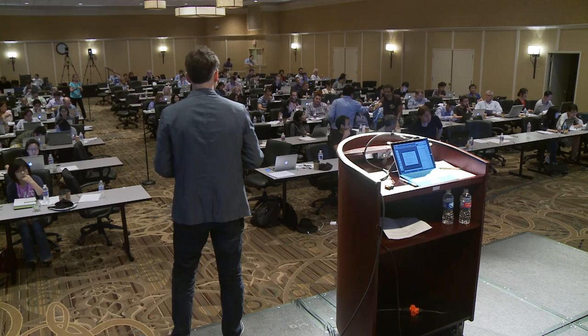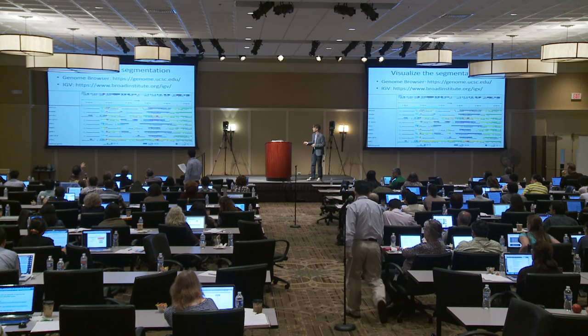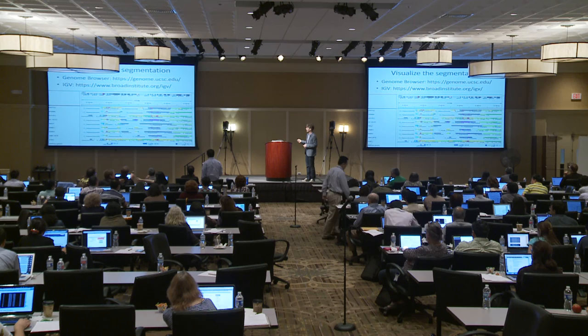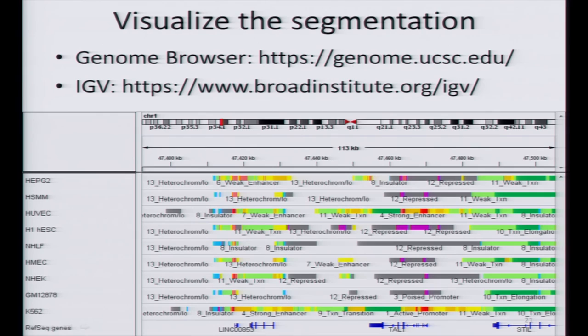Regarding the segmentation labels such as repressed insulators: these colors and labels are from the original Nature paper on chromatin states in nine cell lines, defined based on different annotations. If you run with different marks, you will probably get different labels. It's not something general that applies universally — it depends on what you put into the model.